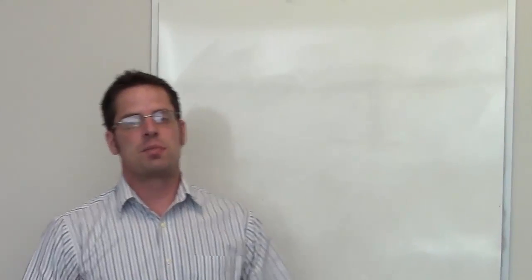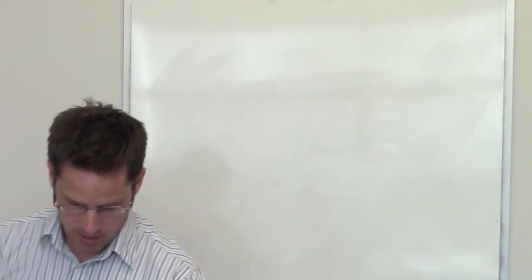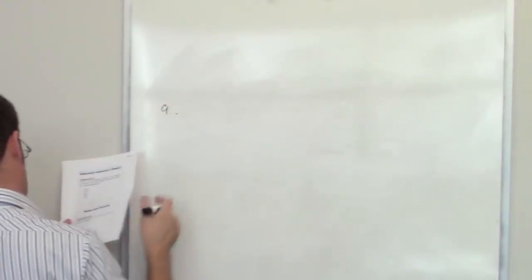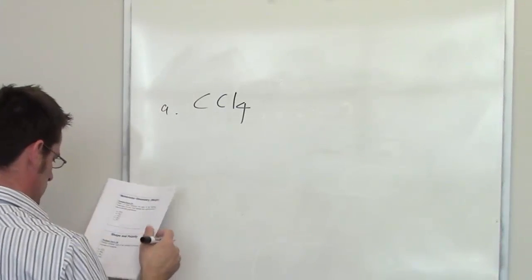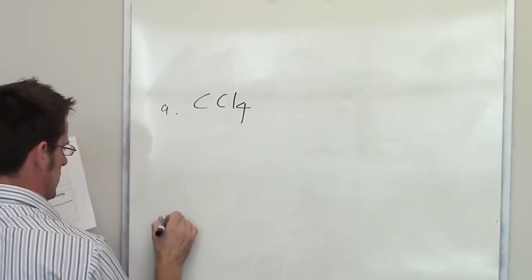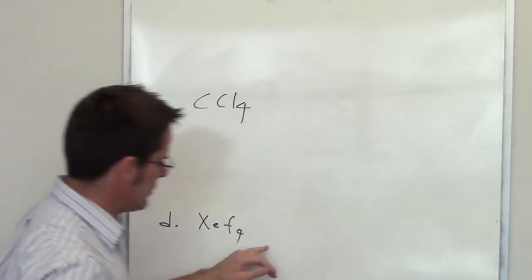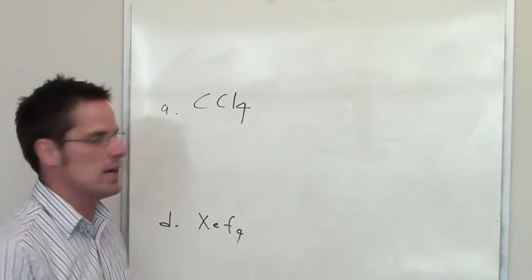Okay, this question asks us to predict whether each of the following molecules is going to be polar or nonpolar. I'm not going to do all of the ones from the video, but I will do, I'll go ahead and do two of them. I'll do carbon tetrachloride, and then I will do, what the heck, I'll do xenon tetrafluoride. So, the first step in determining if a molecule as a whole is going to be polar or nonpolar is to draw its Lewis structure.